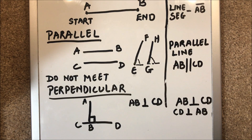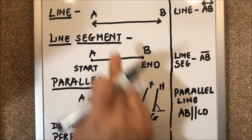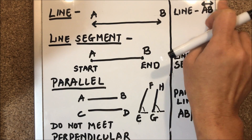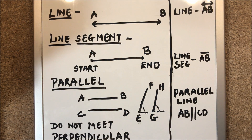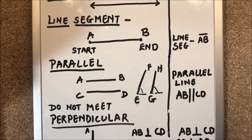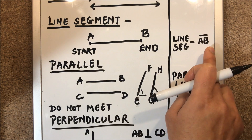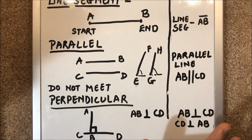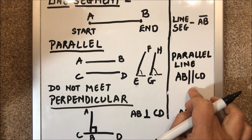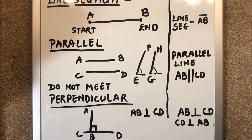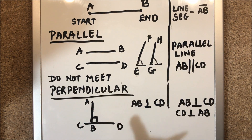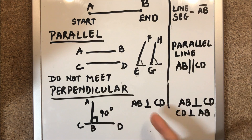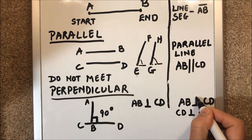In this video we have studied four things. First is line — a straight path extending in both directions, represented by a bar on top with a two-sided arrow. Next is line segment — a line with a fixed length, having a start point and an end point, represented with a bar on top only. Next are parallel lines — two lines that do not meet at all, represented with two straight bars. Finally, perpendicular lines — two lines that meet at an angle of 90 degrees, represented with a horizontal and vertical bar symbol.